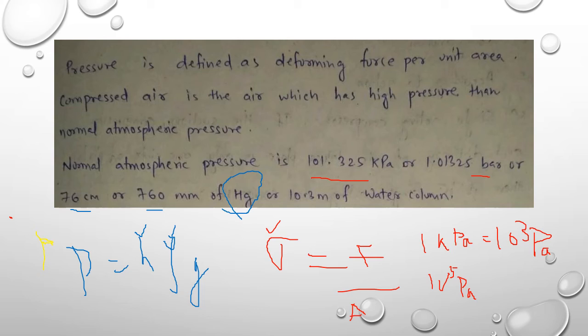Now normally, what is compressed air? Compressed air is the air that has more pressure than the atmospheric value.